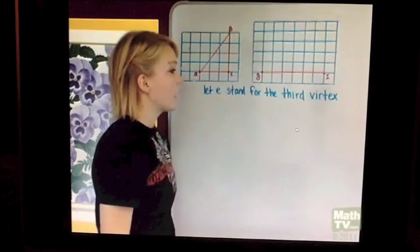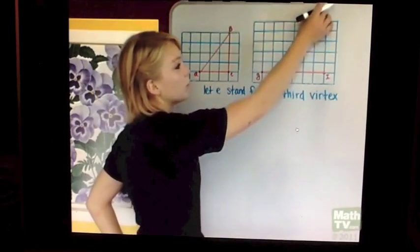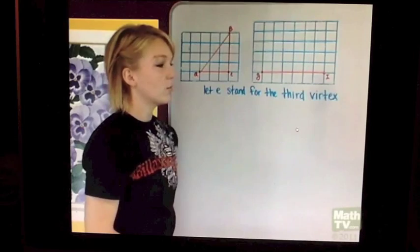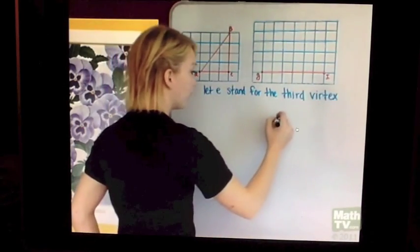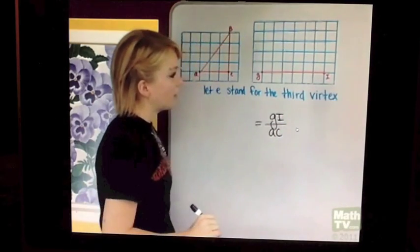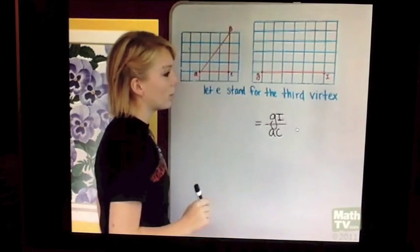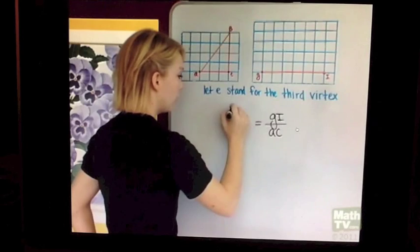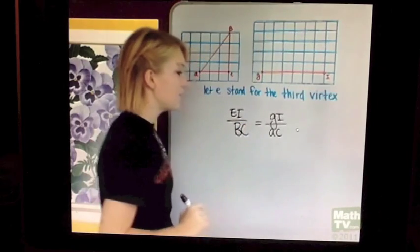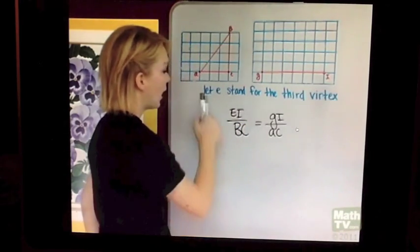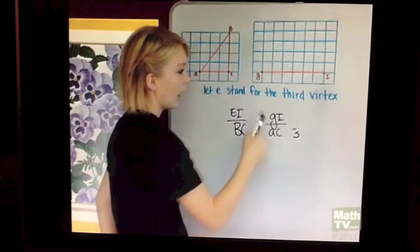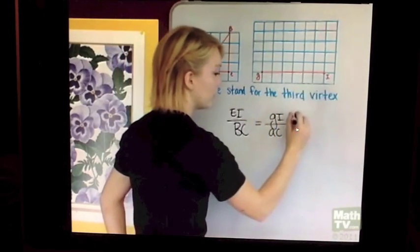We're going to let the third vertex stand for E. We know that E will be somewhere up over here just like B is. Now, they give us that AC is proportional to GI. Which means that if we have BC, we know if we're letting E stand for the third vertex, EI will be proportional to BC. We also know that AC is 1, 2, 3, 4 squares apart and GI is 1, 2, 3, 4, 5, 6 squares apart.